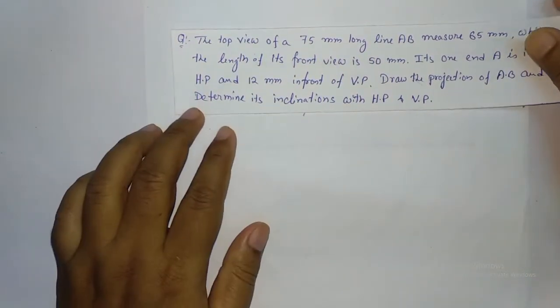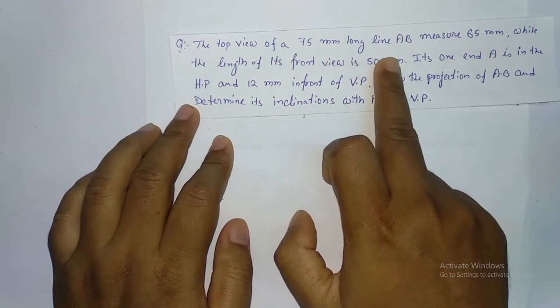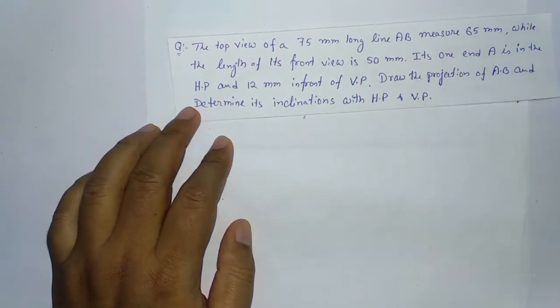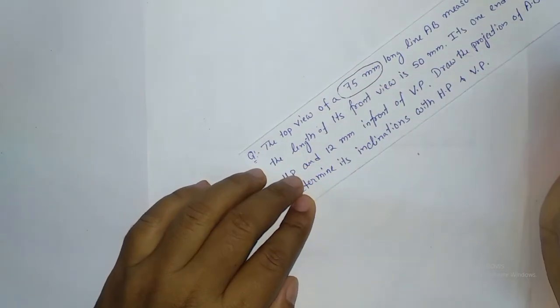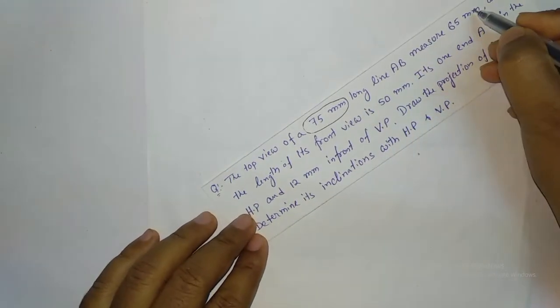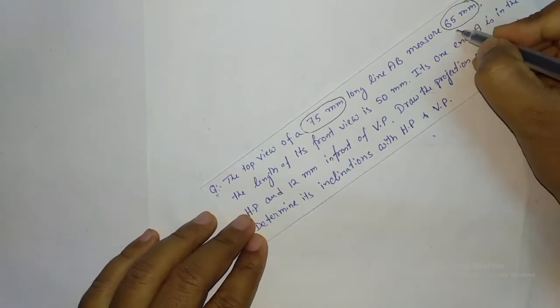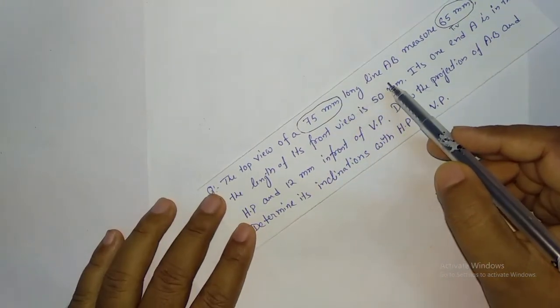In this video, I am going to start with an example of a line inclined with both the planes. The question is: the top view of a 75 mm long line AB measures 65 mm. So the original length is 75 mm and its top view is measured as 65 mm.